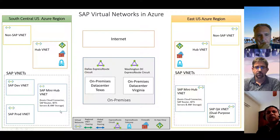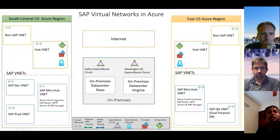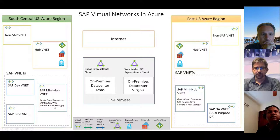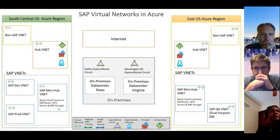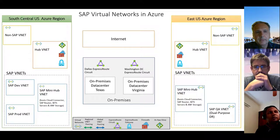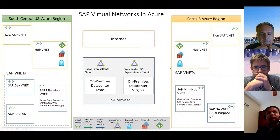The mini hub VNet was created to host shared SAP components like cloud connector to connect to SAP BTP, the SAP Router for SAP support connectivity, WTS servers for admin logins, and ANF storage for hosting sapmnt, transports, interfaces, and SAP software. The East US region also had a hub VNet and spoke VNets with non-SAP and SAP VNets — the QA VNet and mini hub. The dev environment doubled as a DR solution, with the QA HANA VM hosting both the QA database and the DR database.